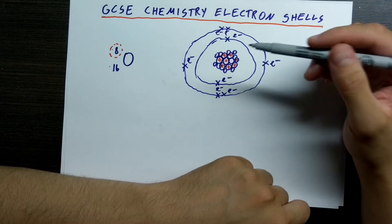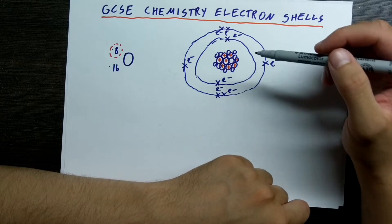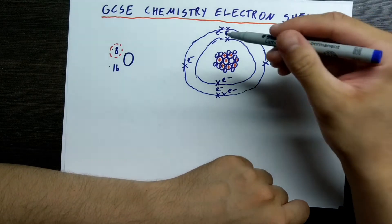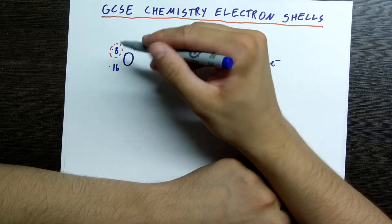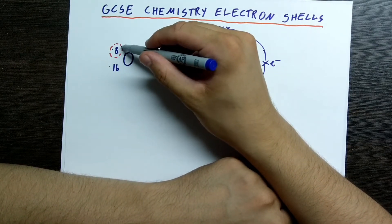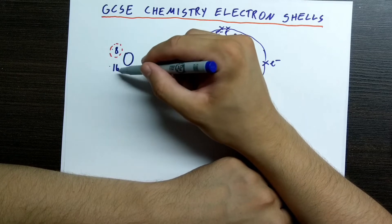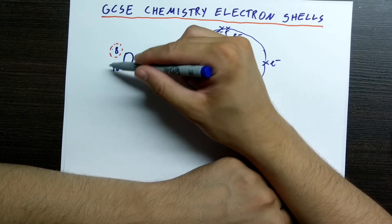First let's look at the atomic structure. First of all, we have oxygen here, which is an atom, and we have the atomic number here, and we have the mass number here.